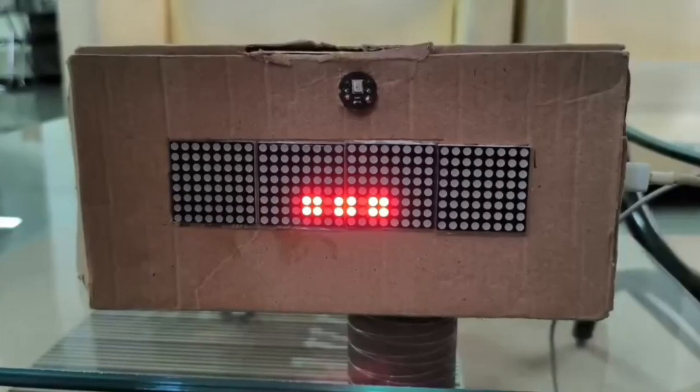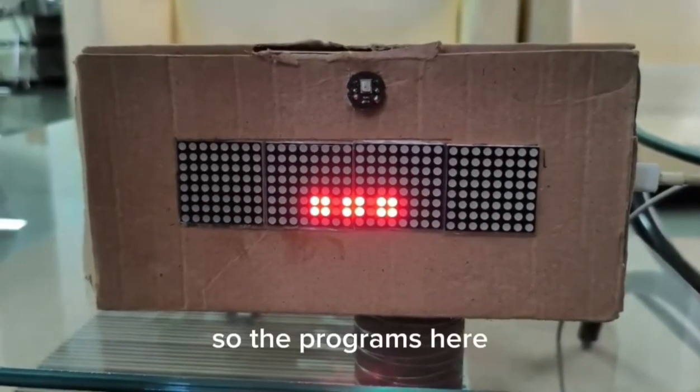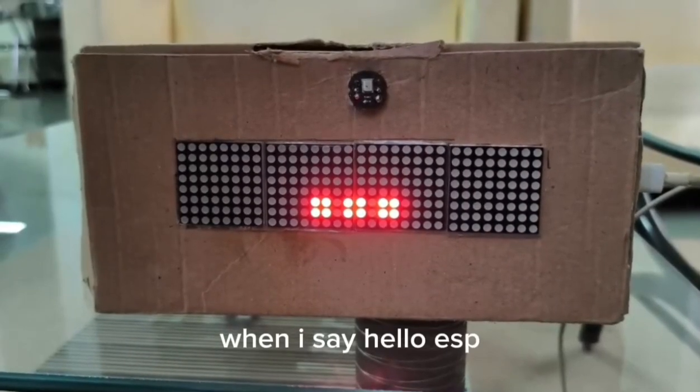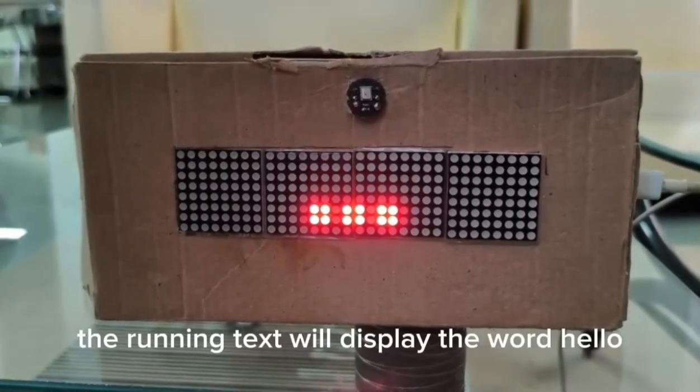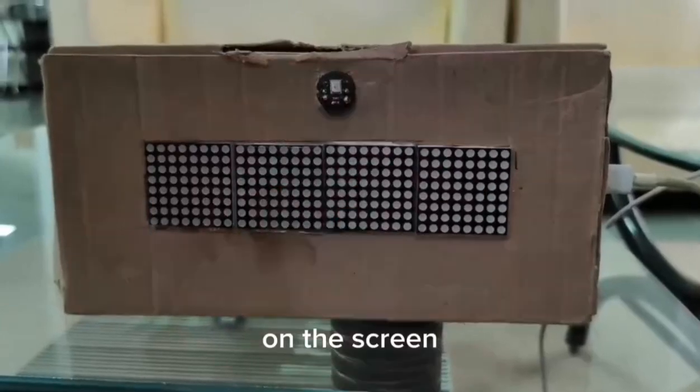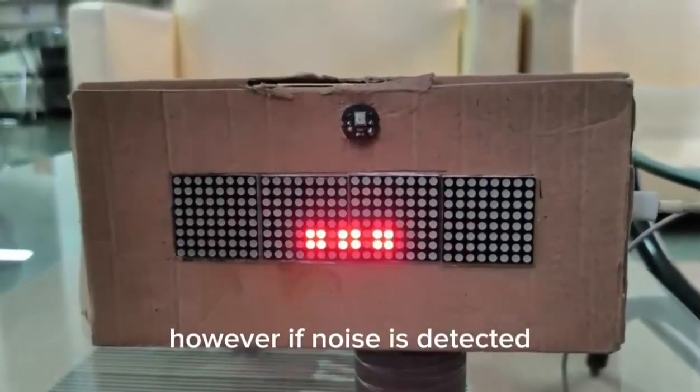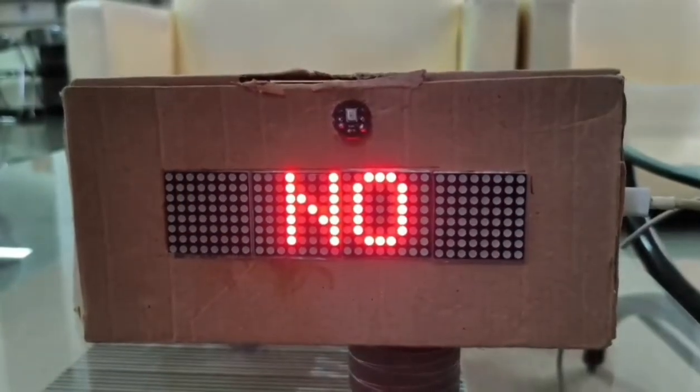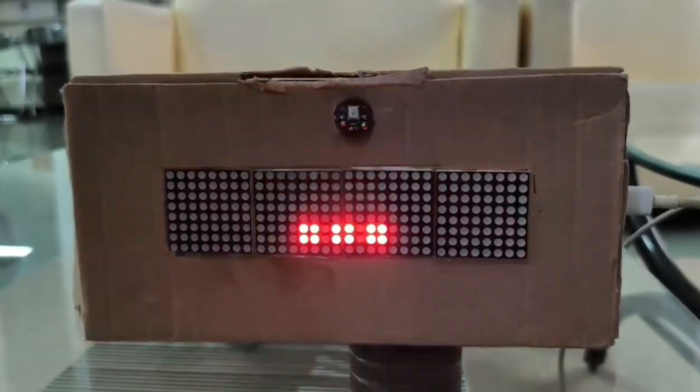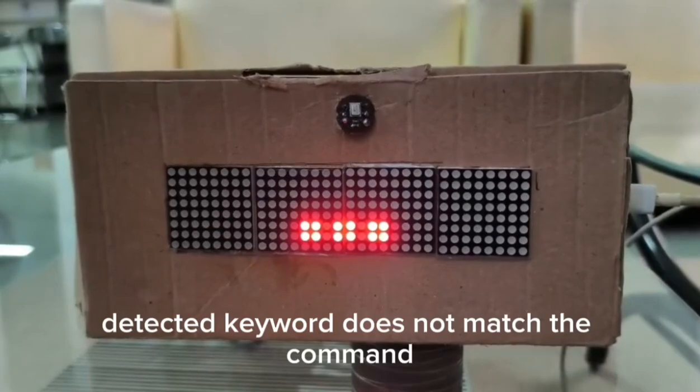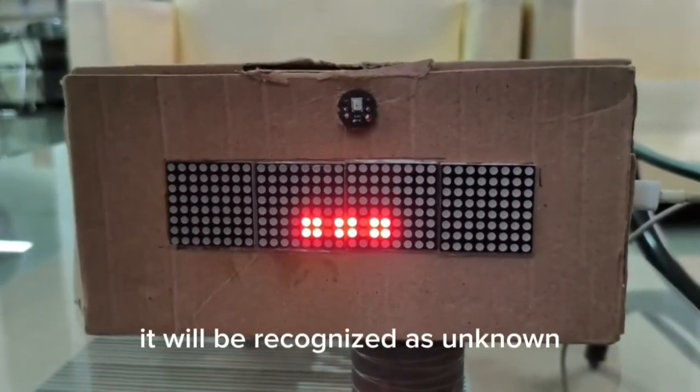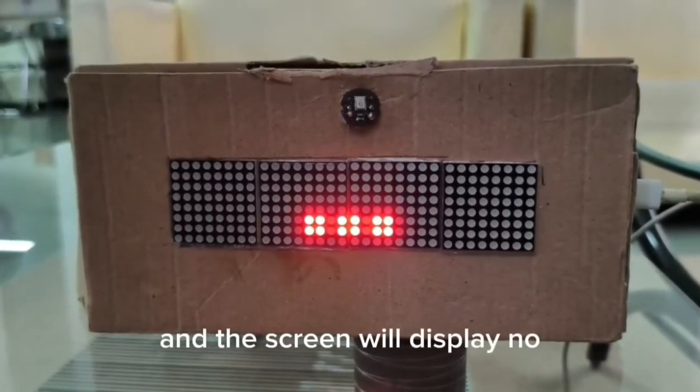So the program's gonna be like when I say hello ESP, the running text will display the word hello on the screen. However, if noise is detected it will show three dots, and if the detected keyword does not match the command like hello ESP, it will be recognized as unknown and the screen will display that.